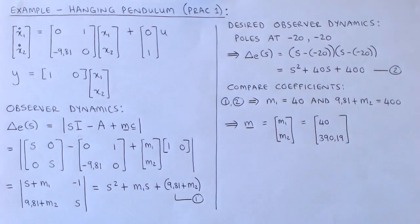In this example, it is possible to place the observer poles in any desired location. We will address the question for which systems we can place the observer poles anywhere at a later stage. Also note that the design of the observer gain follows a very similar process to the design of the state feedback gain. We will exploit this fact at a later stage.